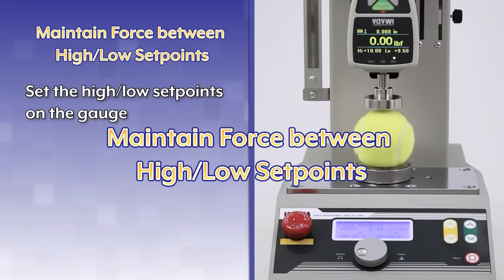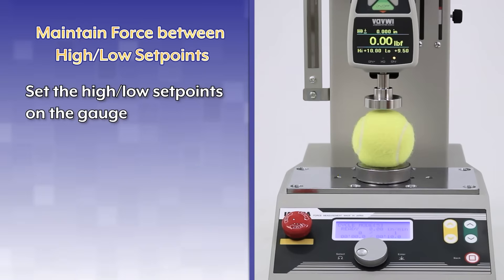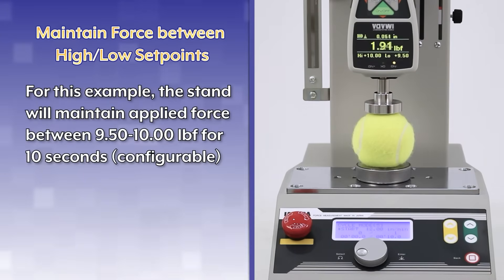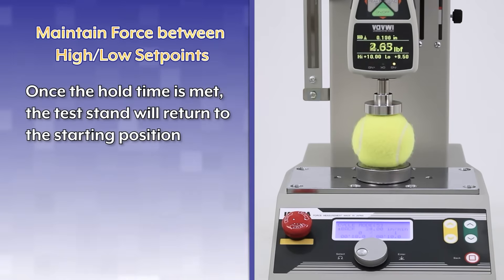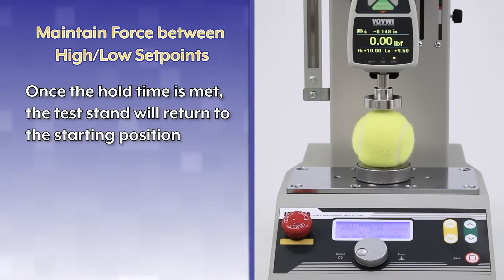Maintain force between high-low set points. Set the high-low set points on the force gauge. In this example, the stand will maintain applied force between 9.5 and 10 pounds force for 10 seconds, configurable. Once the hold time is met, the stand will return to the starting position.